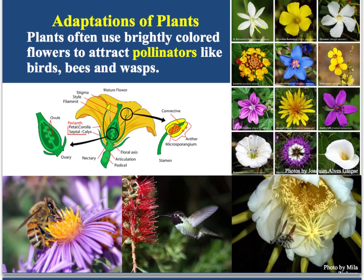Even plants will come up with adaptations. This one is not so much an adaptation against a predator — it's actually an adaptation to attract pollinators. Plants can't move around to reproduce; they depend on animals to carry pollen from one flower to another. Flowers use their very bright and pretty colors to attract bees and birds so they will come get nectar and pollinate the flower in the process.